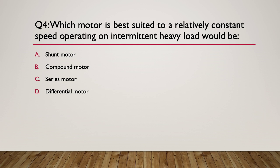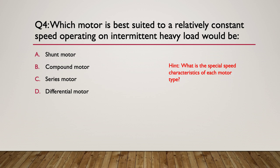Question four: which motor is best suited to a relatively constant speed operating on an intermittent heavy load? So which motor would be best for maintaining a nice fixed speed, but the load itself is changing? A: a shunt motor. B: a compound motor. C: a series motor. D: a differential motor. Or A, B, or C? Pause here. Here's your hint — what is the special speed characteristic of each motor type? In the previous presentation, we actually displayed all the speed characteristics for each of the motor types.